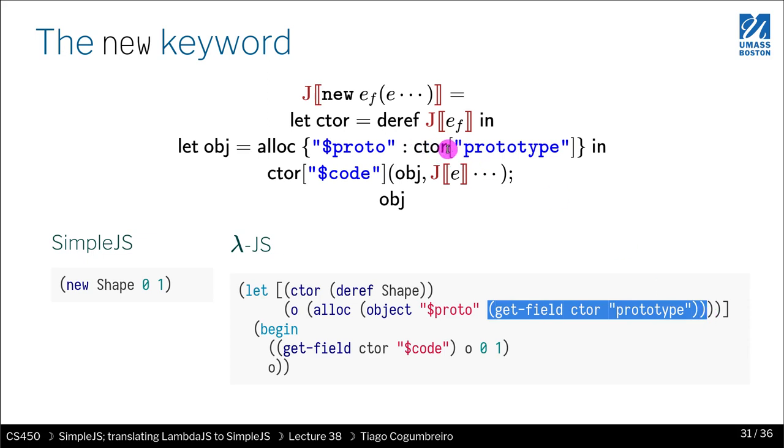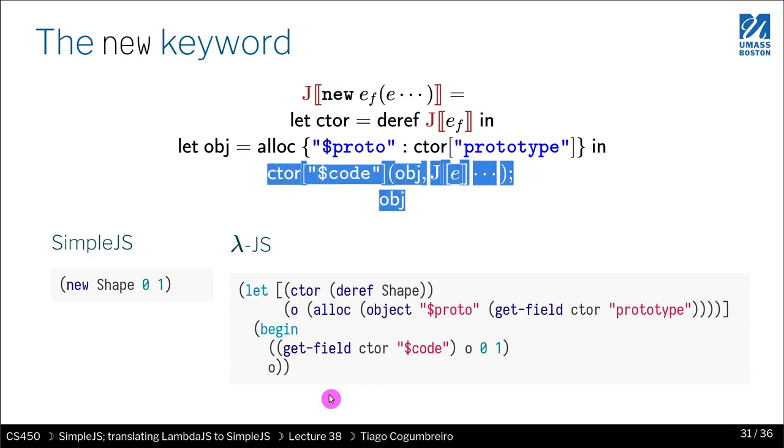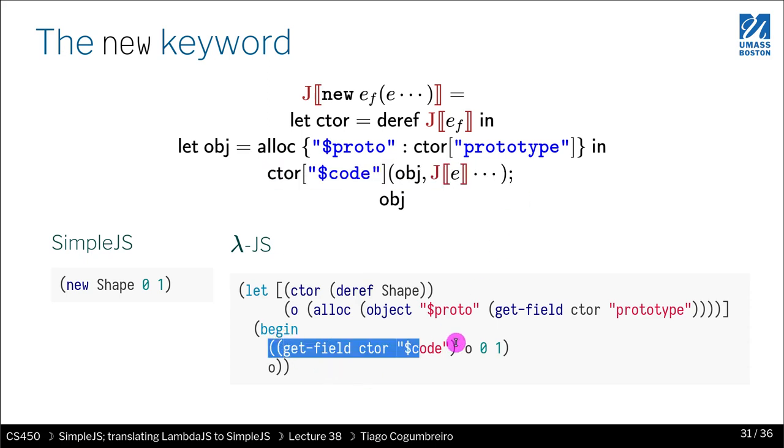What is the value of Proto? It's getFields, right, because this is a lookup. Variable is CTOR and string is prototype. Inside, notice there's an in and then semicolon. So this whole thing, these two things, should be inside a begin. This highlighted in blue corresponds to this line. Second line, to O. So let's look at this line.